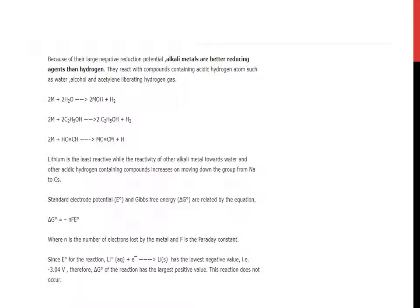Similarly, lithium is the least reactive, while reactivity of other alkali metals towards water and other acidic hydrogen-containing compounds increases on moving down the group from sodium to cesium. Standard electrode potential having formula ΔG° equals minus NFE°, where N is the number of electrons lost by metal and F is Faraday's constant.